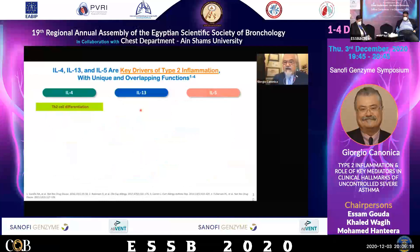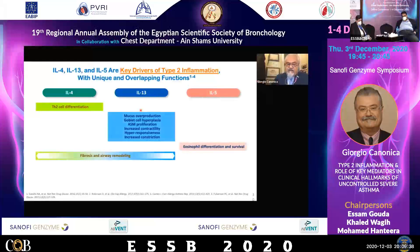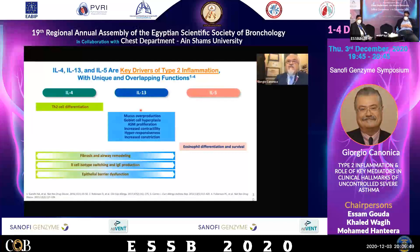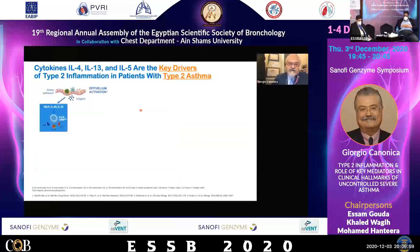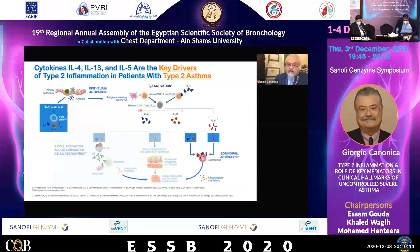The key drivers are: IL-4 for TH2 cell differentiation; IL-13 for airway remodeling as described before; and IL-5 acting on eosinophils. These three major cytokines drive fibrosis and airway remodeling, B-cell isotype switching, epithelial barrier dysfunction, and eosinophil recruitment and trafficking to the tissues — including B-cell activation, mucus hypersecretion and remodeling, and eosinophilic activation. These processes are interconnected in a sort of loop.